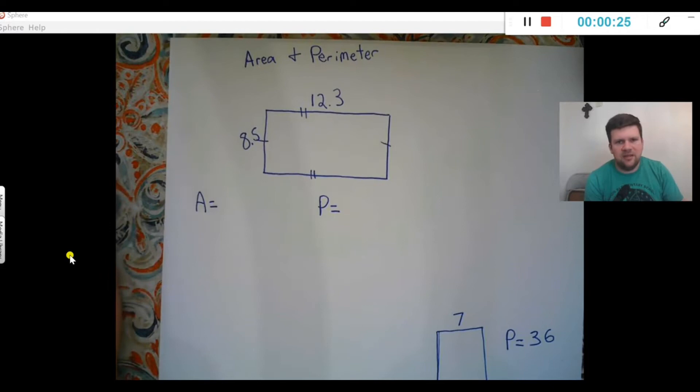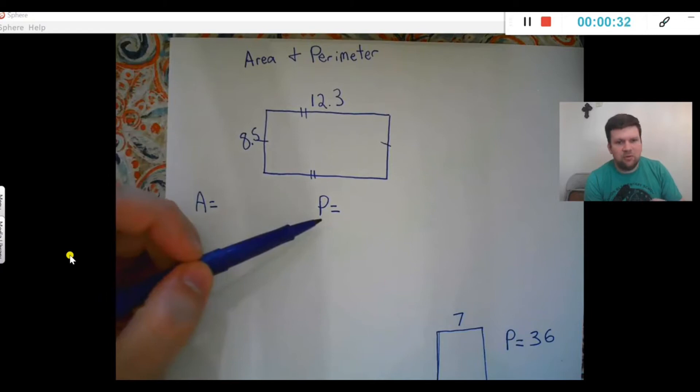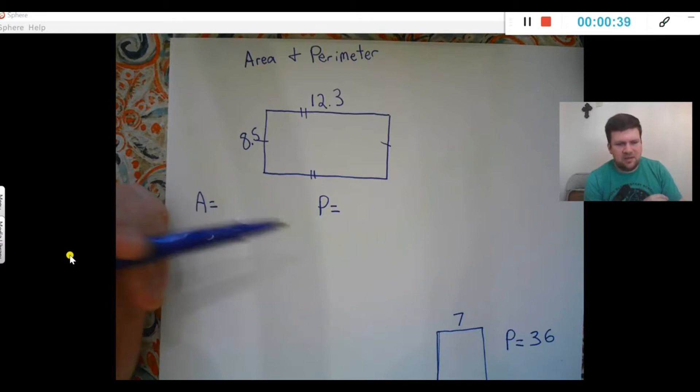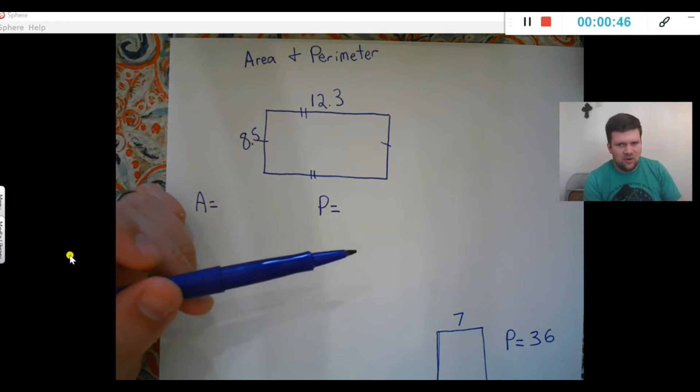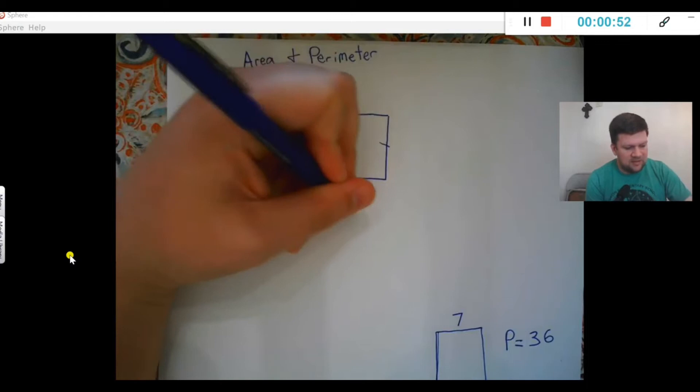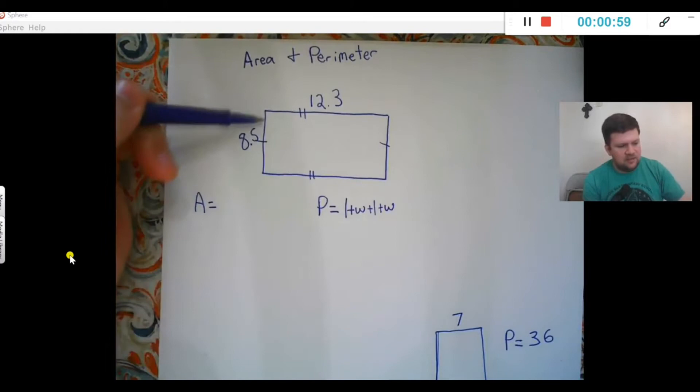Think, say it out loud: what formula would I be using to find perimeter? Hopefully you said something along the lines of length plus width plus length plus width, or two lengths plus two widths, or length plus width times two. Any of those would work. The way we've been doing it is length plus width plus length plus width. Perimeter gives you the distance around the shape, so if you're building a fence around this shape, that tells you right there you're finding perimeter.